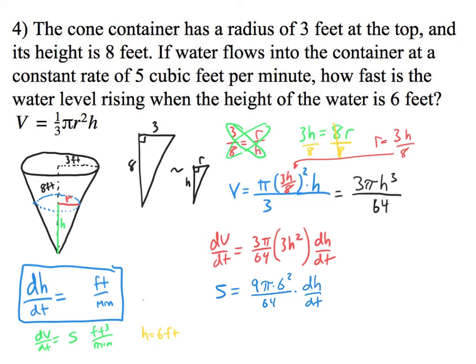Then, what you do next is, could I multiply both sides by 64 over nine pi times six squared? And won't that cancel with that? We got to do it to both sides.